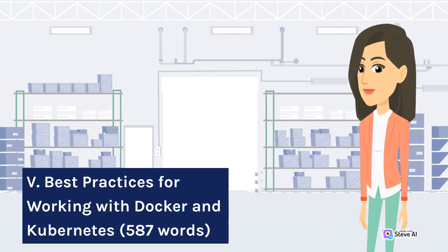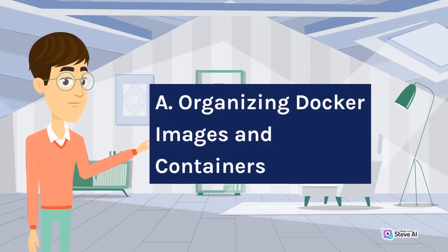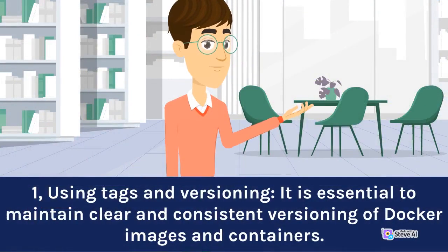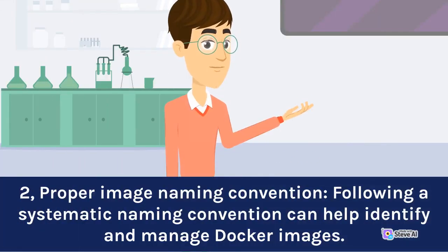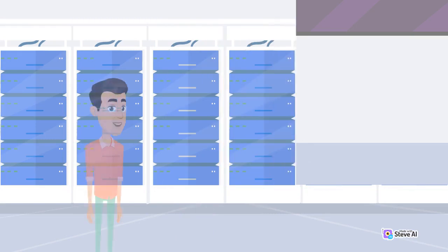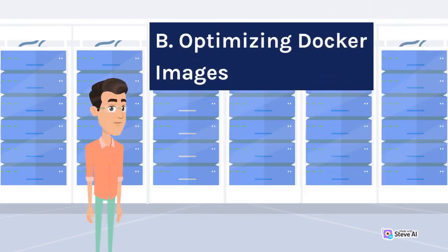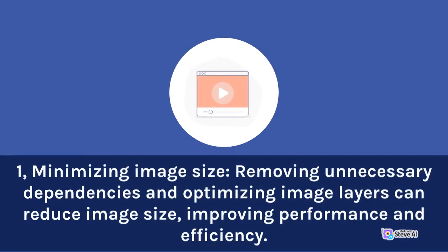Best practices for working with Docker and Kubernetes. Organizing Docker images and containers: using tags and versioning — it is essential to maintain clear and consistent versioning of Docker images and containers. Following a proper image naming convention can help identify and manage Docker images. Optimizing Docker images: minimizing image size by removing unnecessary dependencies and optimizing image layers can reduce image size, improving performance and efficiency. Only include the required packages and libraries in Docker images to minimize security risks and container footprint.